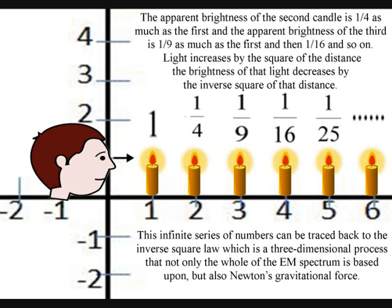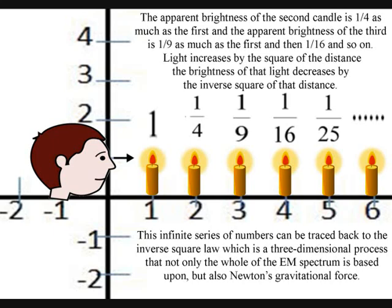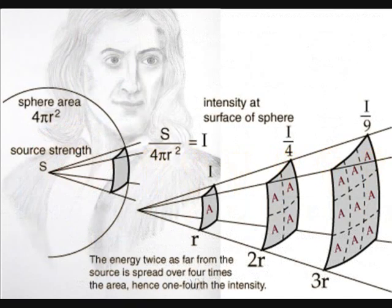The apparent brightness of the second candle is one fourth as much as the first and the apparent brightness of the third is one ninth as bright as the first and then one sixteenth and so on. In other words the light increases by the square of the distance, the brightness of the light decreases by the inverse square of the distance.